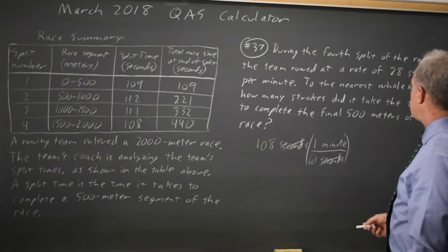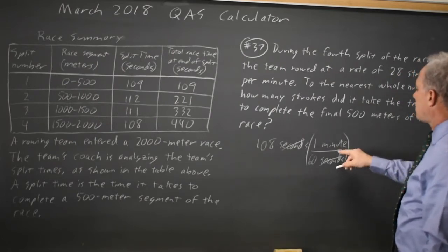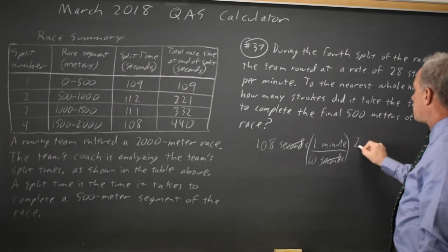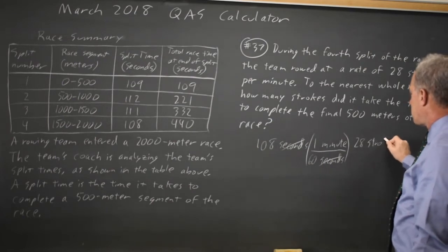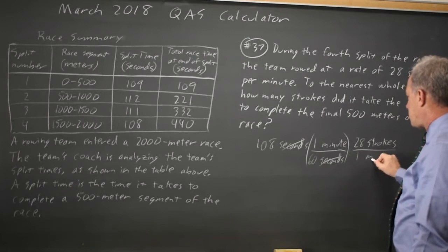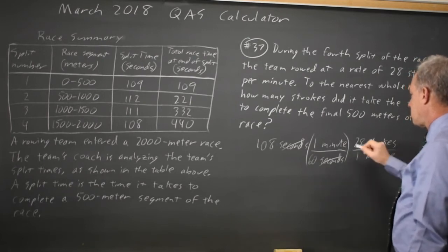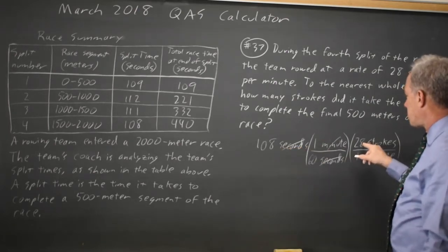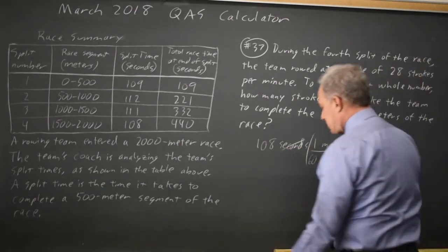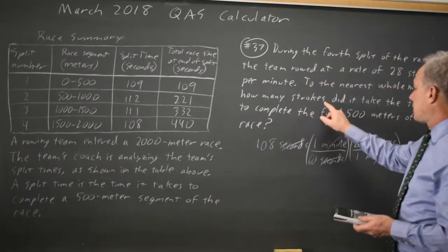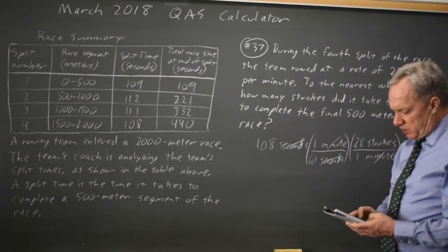I also know my strokes per minute, and that will cancel the minutes here, with 28 strokes per 1 minute. Minutes cancel, and now I'm left with 108 times 28 strokes divided by 60 as my number of strokes. I'm asking how many strokes, so that's the correct units.